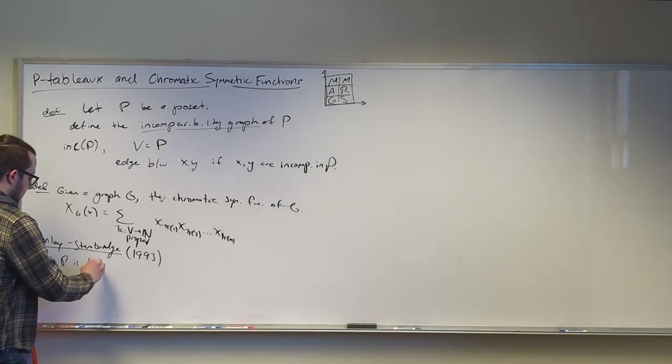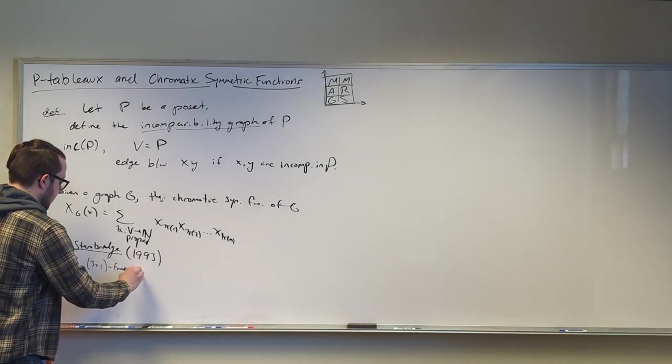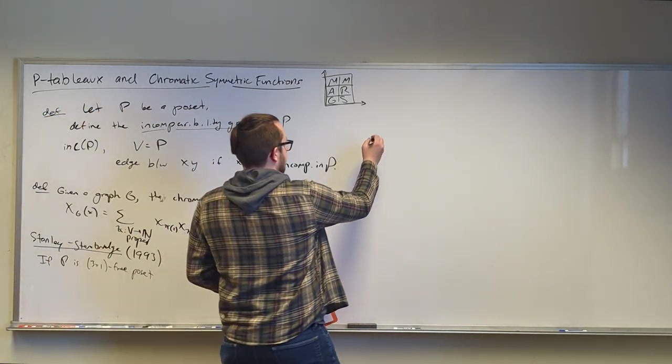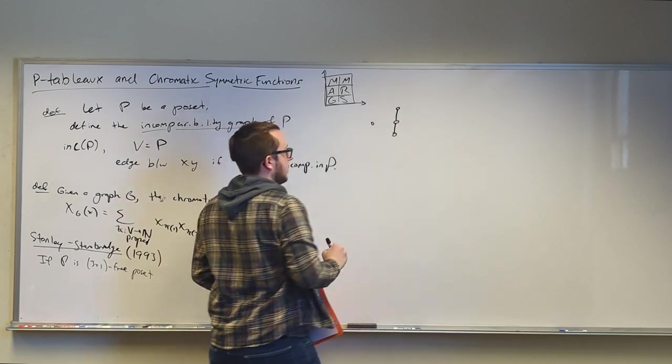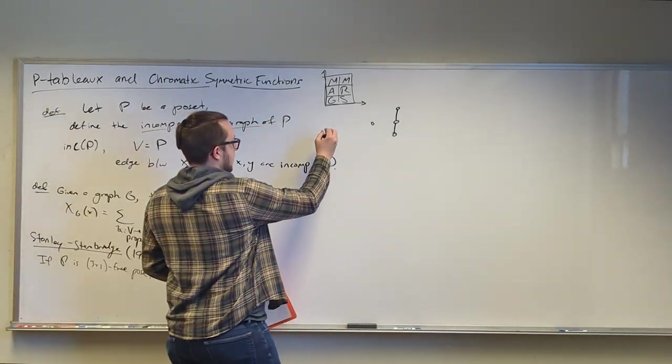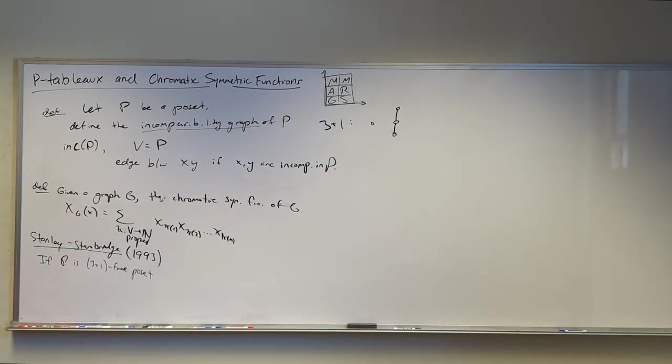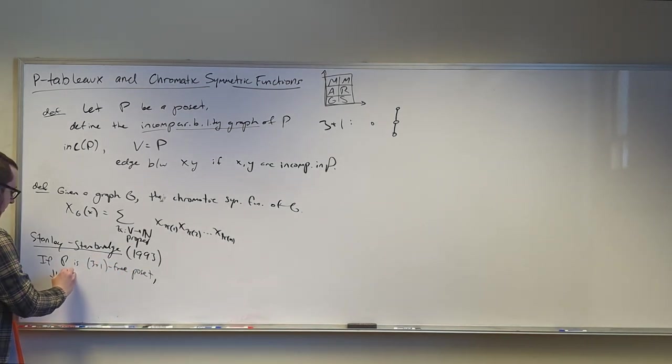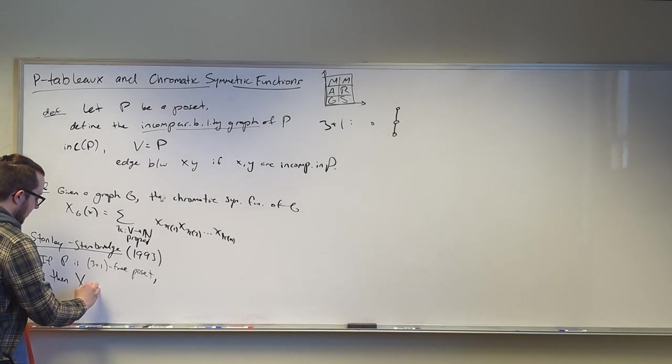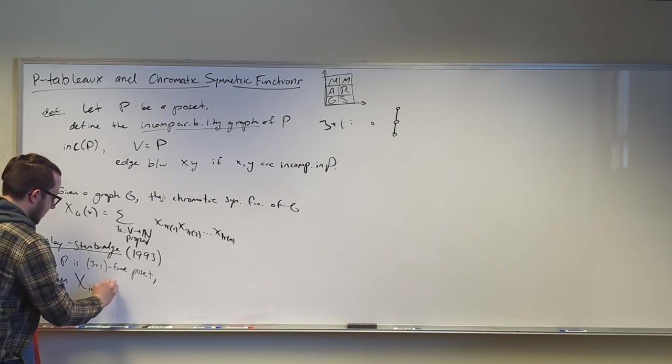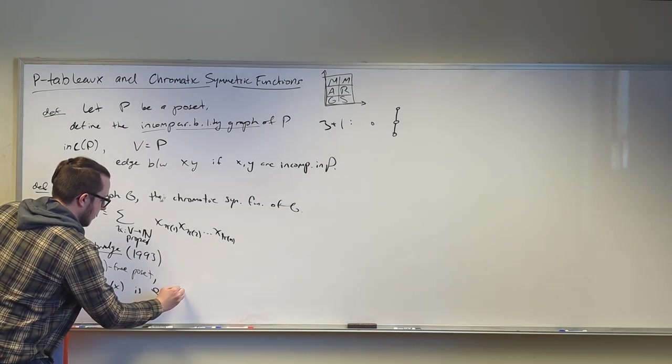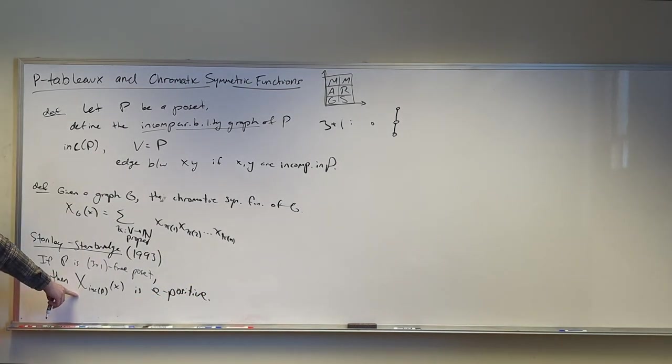If P is a 3 plus 1 free poset, which means you don't have an induced sub-poset that is isomorphic to that. This is the poset 3 plus 1. So if my poset doesn't contain that as an induced sub-poset, then if I take the chromatic symmetric function of the incomparability graph of P, it is E positive. So if I express the symmetric function in the elementary symmetric function basis, it is expanded with positive coefficients, positive integer, or I think it's an integer for this, but not always.